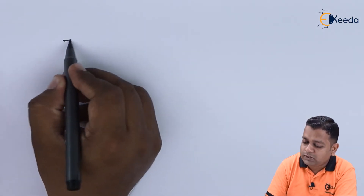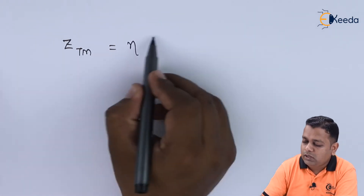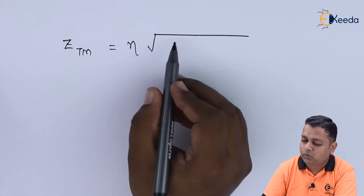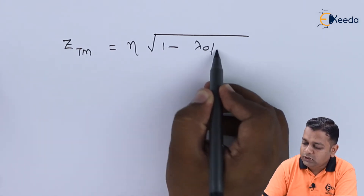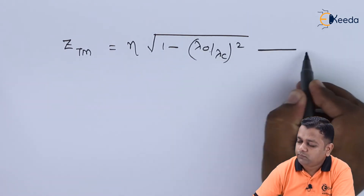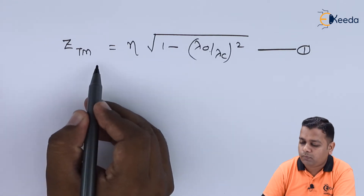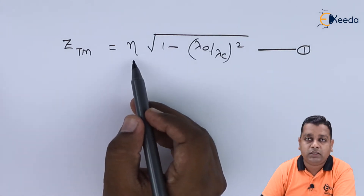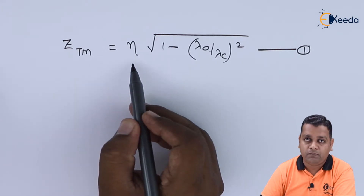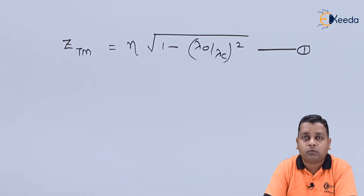For determination of the characteristic wave impedance for the given mode of propagation, we use the formula: Z_TM = η × √(1 − (λ₀/λ_c)²), which we denote as equation number one. Here η is the intrinsic impedance, determined using ε₀ and μ₀.